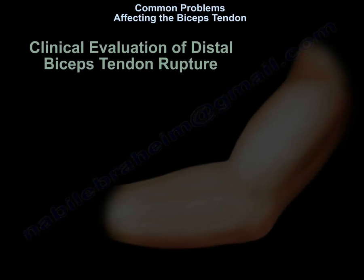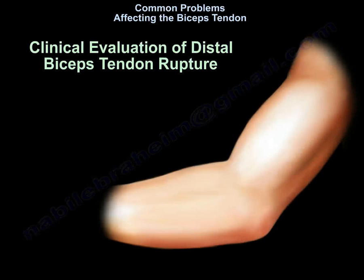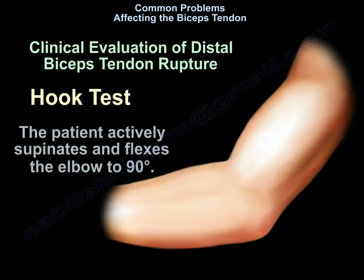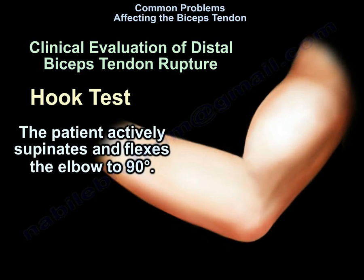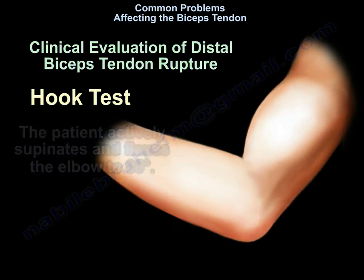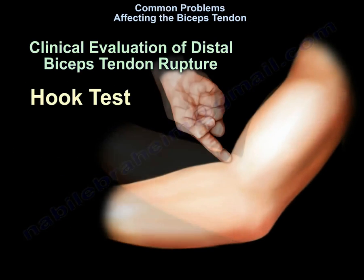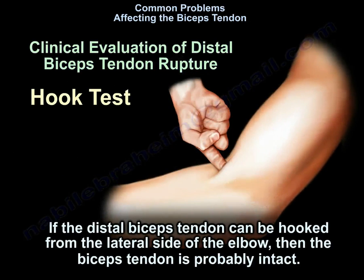How do you perform clinical evaluation of the distal biceps tendon rupture? By the hook test — the patient actively supinates and flexes the elbow to 90 degrees. If the distal biceps tendon can be hooked from the lateral side of the elbow, then the biceps tendon is probably intact.